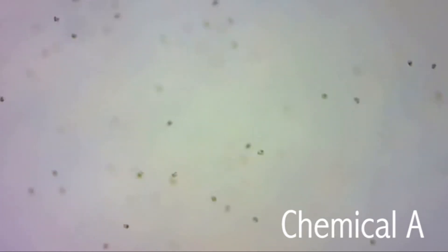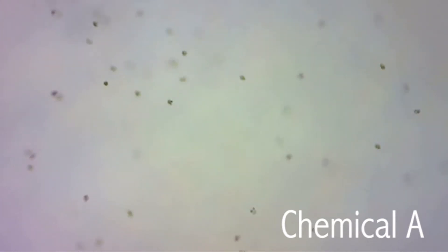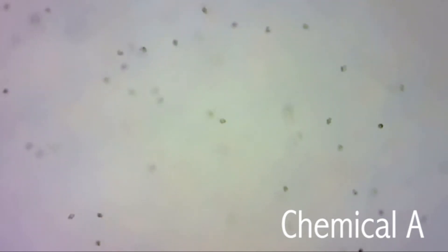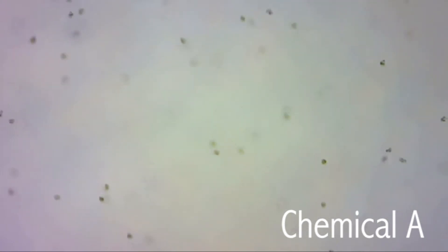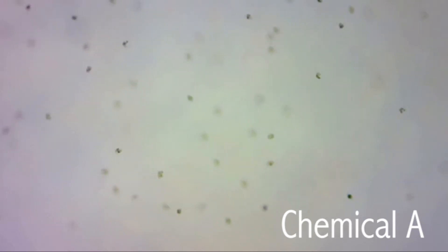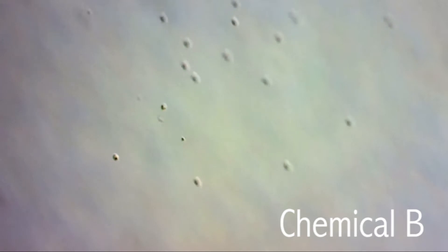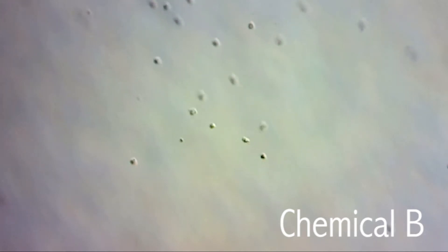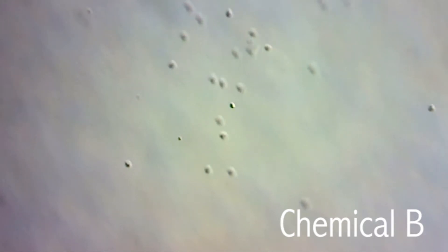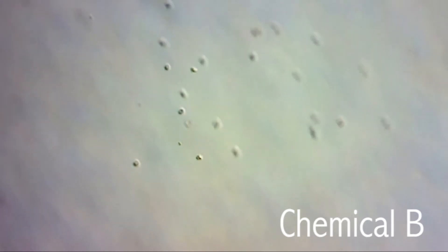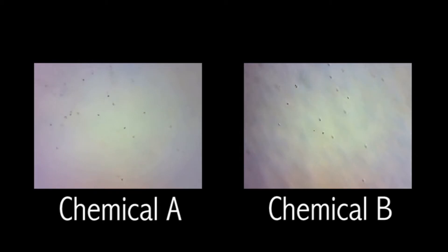After the sperm were released, we added chemicals dubbed chemical A and chemical B into the sperm release buffer to see how the sperm would react. This allowed us to visualize chemotaxis. Chemotaxis is the movement of organisms in response to a change in a chemical gradient. They can either respond positively or negatively to the chemical gradient. In the case of the sea fern, the sperm responded positively and all converged at the site where the chemicals were released.